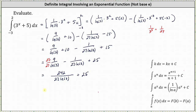We can also get a decimal approximation. This is approximately 33.1584. But again, if we're not told to round, we should always give the exact value.